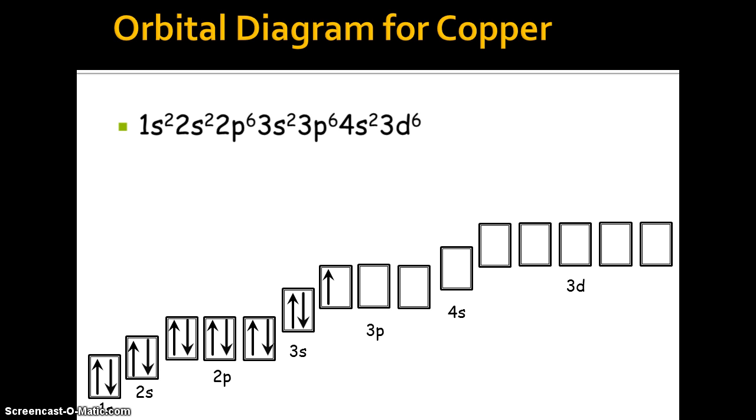Then we move on to our 3s. Then we go to our 3p. 1, 2, 3. 1, 2, 3. So that'll be your 6 in our 3p. Then we have to fill in our 4s. And now we only have 6 in the 3d. So again, we have to fill in each one first before we can fill in a second one. So notice how, since I have 5 orbitals, I fill in each one of those first before I can move on to the second. And now we have our 3d6. And that is our orbital diagram for copper.